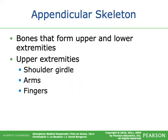The appendicular skeleton comprises the bones forming the upper and lower extremities. Upper extremities include the shoulder girdle, arms, and fingers.